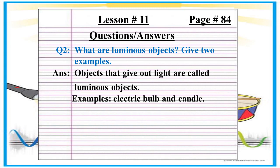Question number 2 is: What are luminous objects? Give two examples. Answer is: Objects that give out light are called luminous objects. Examples: electric bulb and candle.